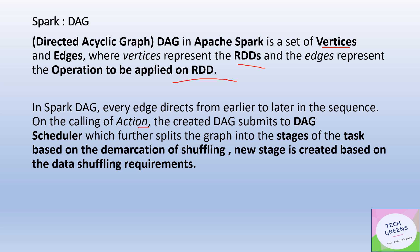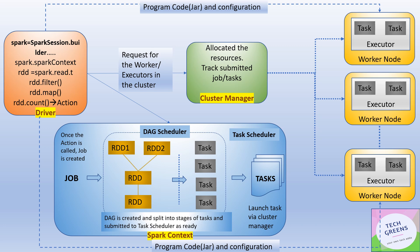Once you call an action, the created DAG is submitted to the DAG scheduler, which further splits the graph into stages of tasks. Stages are created based on the demarcation of shuffle boundaries — a new stage is created based on data shuffling requirements. This touches upon the concept of narrow transformations versus wide transformations, where all narrow transformations will make one stage in the DAG.